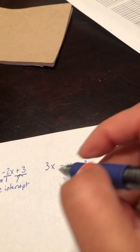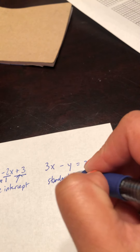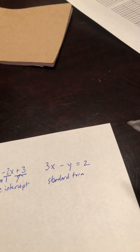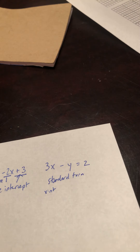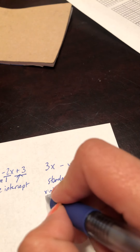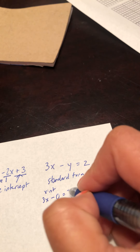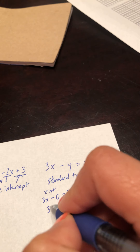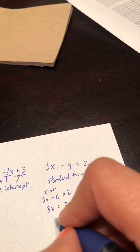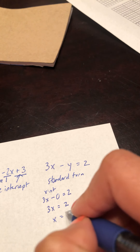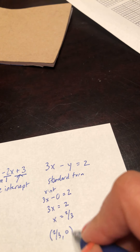Then there's this form you also learned, called standard form. When an equation is in standard form, try to find the intercepts. The x-intercept is when you make the y-value equal to zero. So writing this whole equation with y equal to zero, I get 3x equals two, which makes x equal to two-thirds. That means I can graph the point (two-thirds, zero).